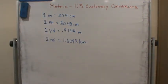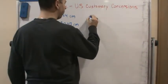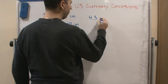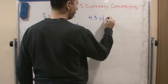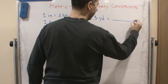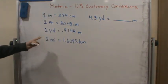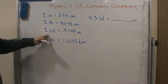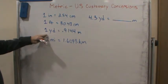So if we want 4.3 yards equals how many meters, then again we're just going to use the appropriate conversion factor, which would be this one right here.